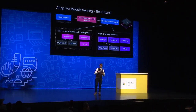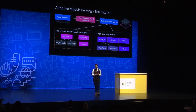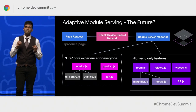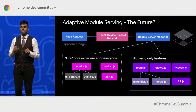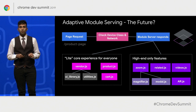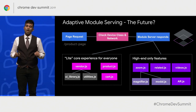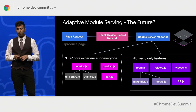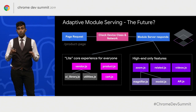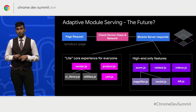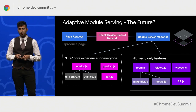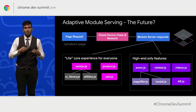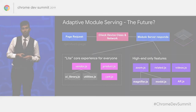Adaptive module serving is something I'm excited about. This is the idea of shipping a light, interactive core experience to all of your users, and progressively adding high-end features on top if a user's device characteristics and network can handle it. It's this device awareness that takes progressive enhancement to the next step.